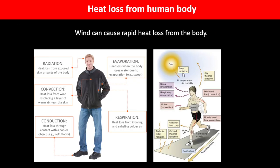Humans can lose heat from our body in several ways: evaporation occurs when our body loses water; respiration causes heat loss as we inhale and exhale cooler air; conduction happens when, for example, a runner steps onto the ground and transfers heat energy into it; convection occurs from exposed skin; and radiation is also emitted from exposed skin.